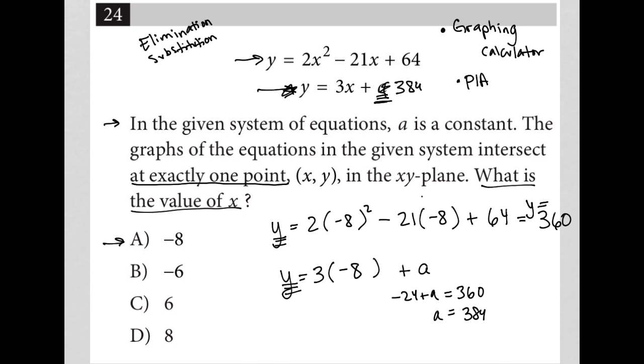So if you have your graphing calculator, plug those in, and you will see that those two equations, you will not get a single point of intersection, you will get two points of intersection. And that's the reason why choice A is not good.